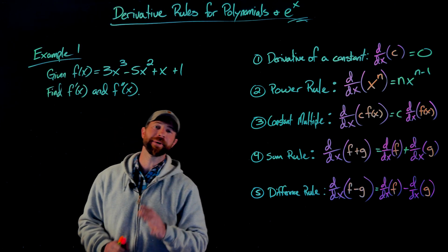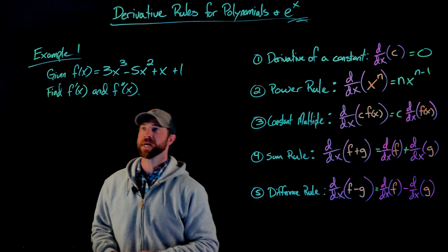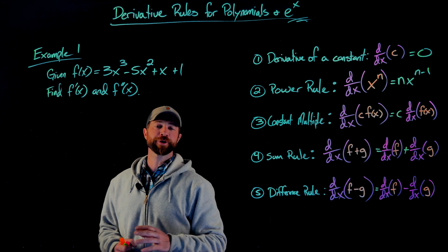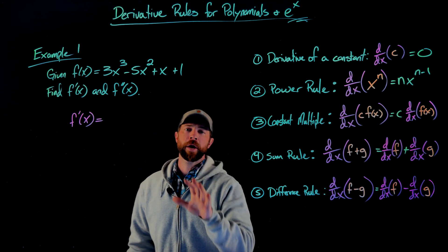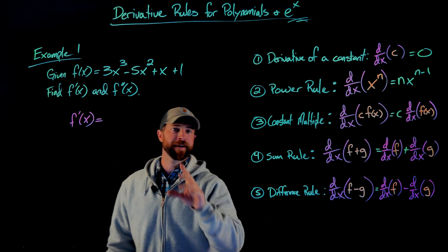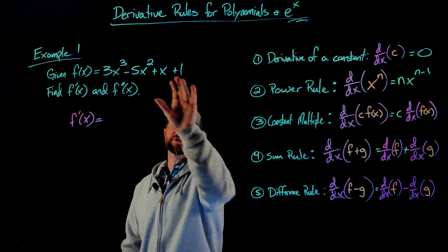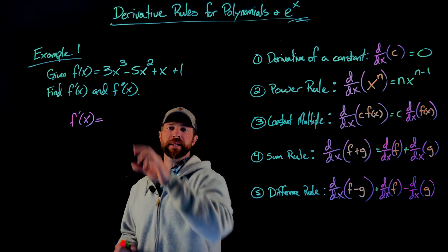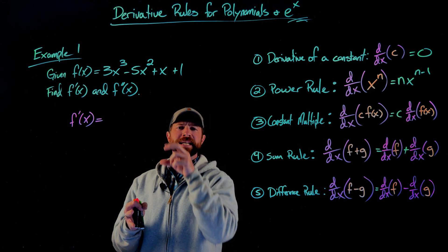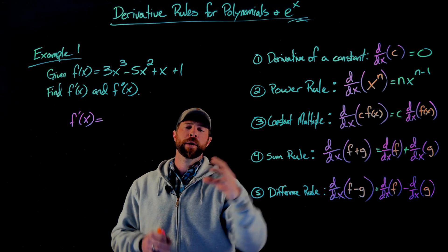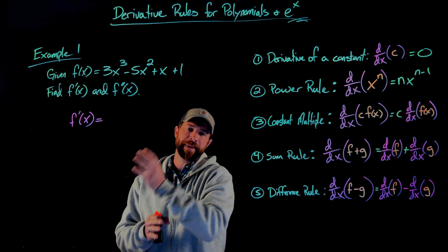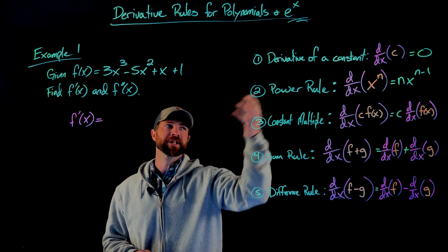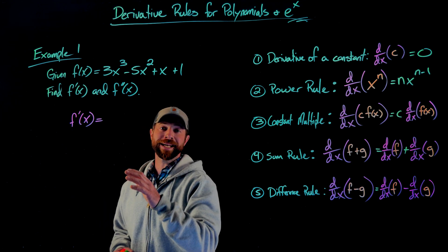In our first example, you're going to see how much easier this makes your life, especially when dealing with polynomials. We're given f of x equals 3x cubed minus 5x squared plus x plus one, and we're asked to find the first and second derivatives. The sum and difference rules let me attack each term separately, the constant multiple rule means the constant doesn't affect differentiation, and the power rule handles the variable parts. The derivative of any constant term is zero.